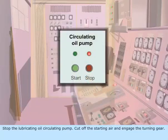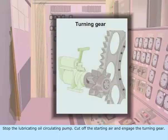Stop the lubricating oil circulating pump. Cut off the starting air and engage the turning gear.